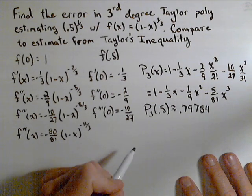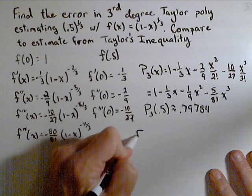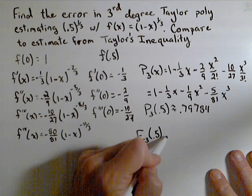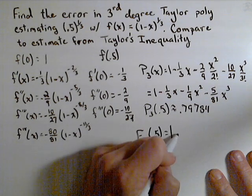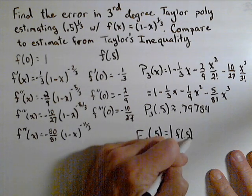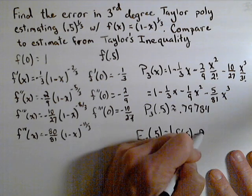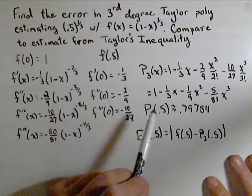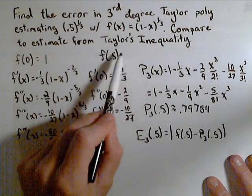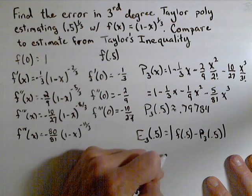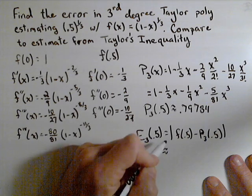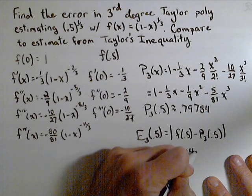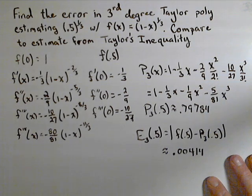So p sub three of 0.5 to a few decimal places is about 0.79784. Now, we can actually calculate the error in our third-degree Taylor polynomial. So e sub three of 0.5, that's the error in our third-degree polynomial at 0.5, is equal to the absolute value of f of 0.5 minus p sub three of 0.5. So p sub three of 0.5, we just calculated here. f of 0.5, that's just 0.5 to the one-third, so you can put that in your calculator, find the difference, and we take the absolute value. It's a pretty small number. It comes out to be about 0.00414. So that's the actual error.